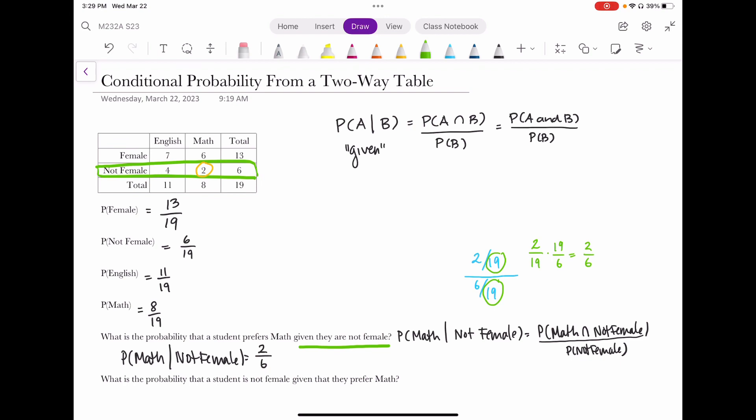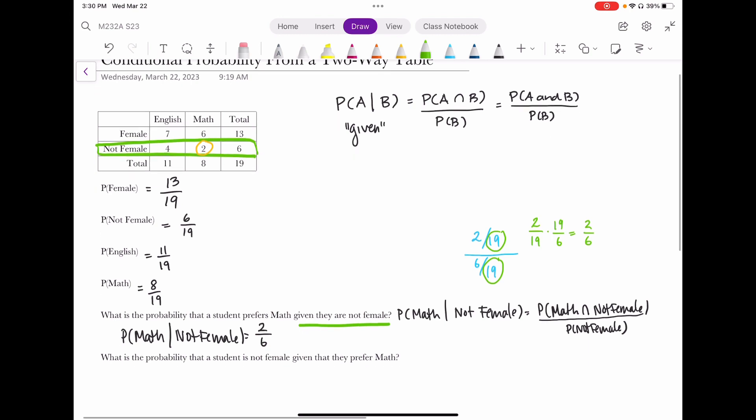The formula does work when you have to think about whether you need to multiply. And that's a whole other situation of whether you're dealing with independent events or dependent events. But from a two way table, all you have to do is focus on the condition that I'm given. What is the group that I'm talking about? If I'm talking about the not females, well, there's six of those. How many of those prefer math? Let's apply that same logic to answer the next question.